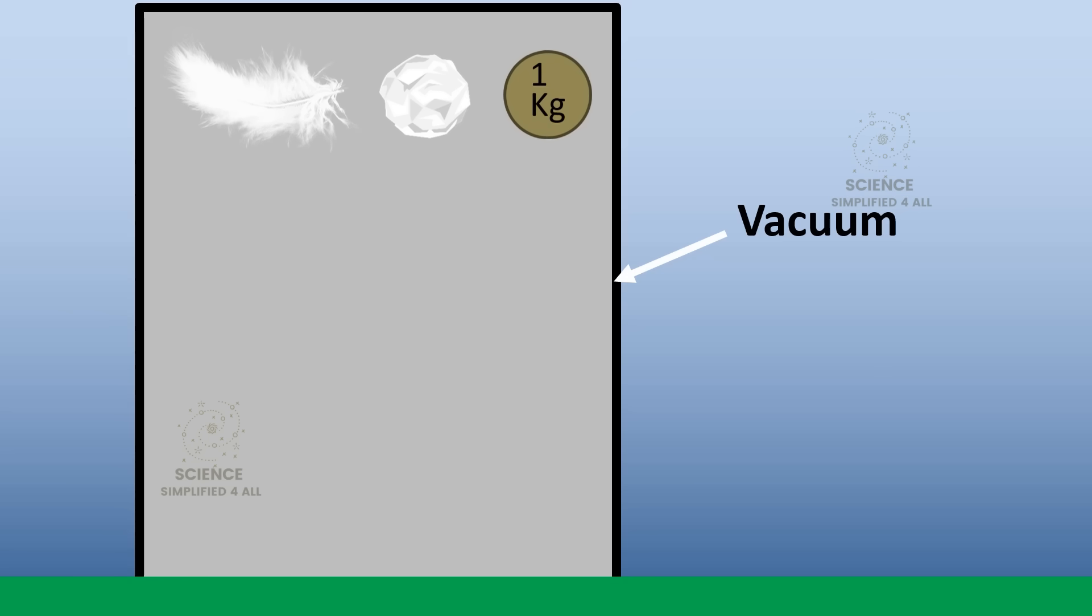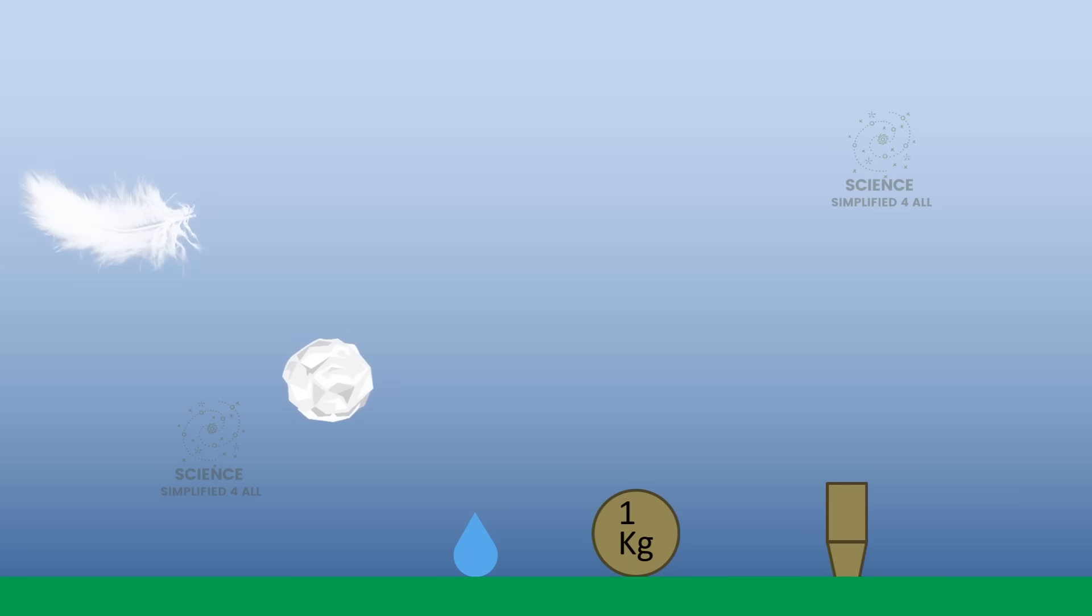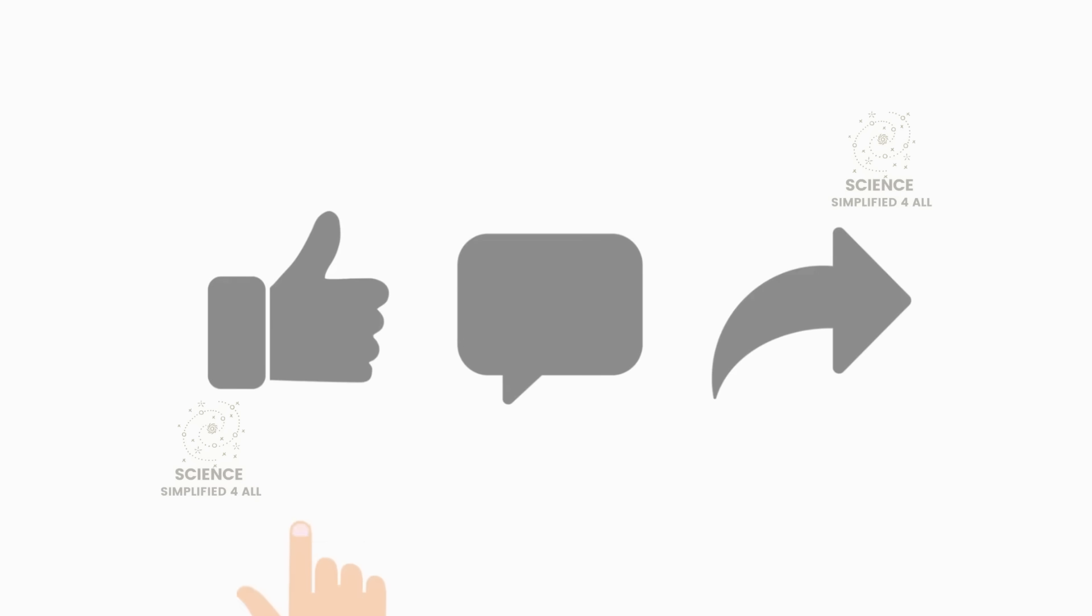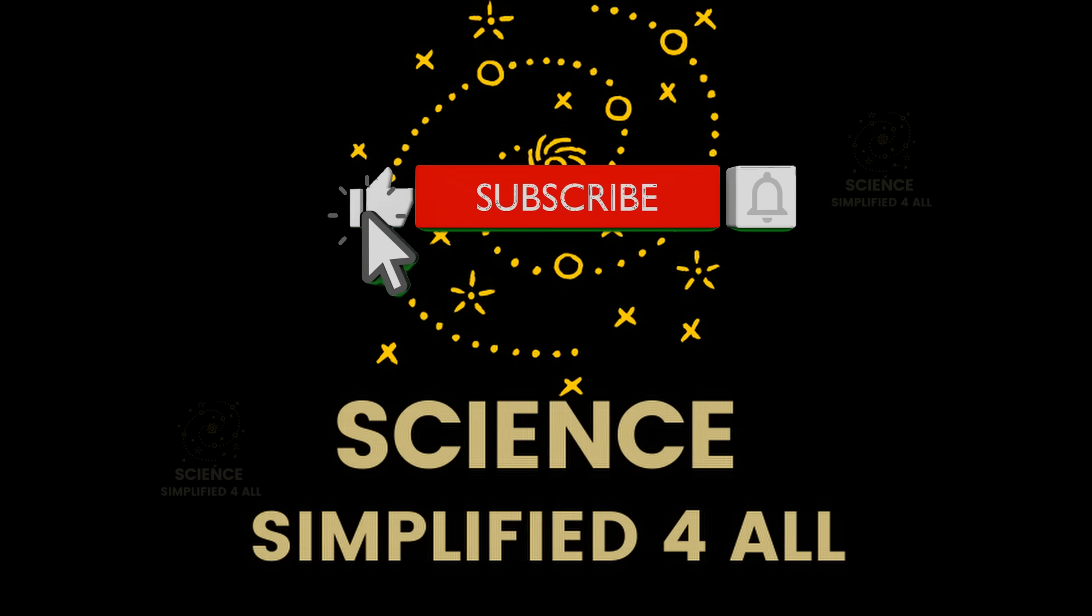Through this video, I hope you now understand just how much of a difference air resistance can make in physics. From bullets to raindrops, from skydivers to meteors, the atmosphere is not just a background. It plays a major role in shaping what really happens. If you found this video interesting, please give it a like and share it with your friends. And for more such science videos, subscribe to this channel and tap the bell icon. Thank you.